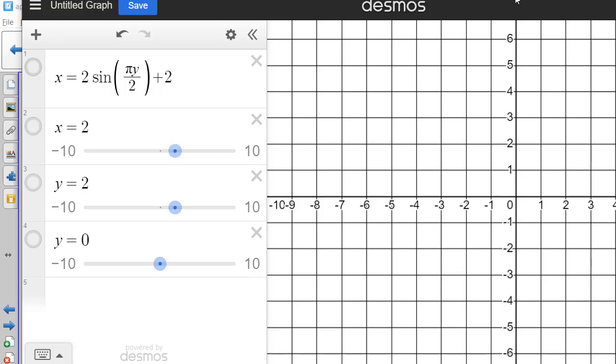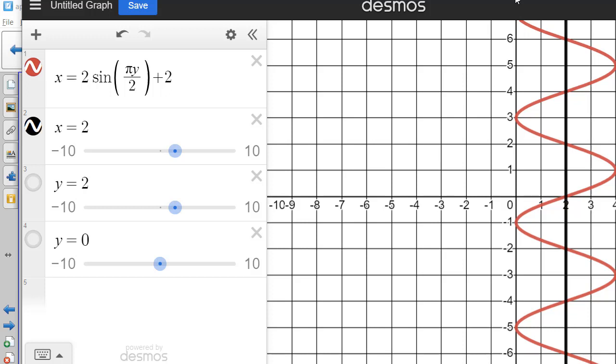Okay, so we have our equation x equals 2 times the sine of pi times y divided by 2 plus 2, x equals 2, y equals 2, and y equals 0.